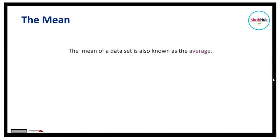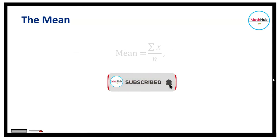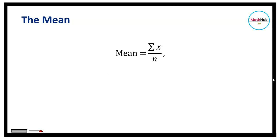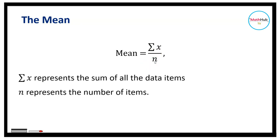The mean of a data set is also known as the average of the data set. This can be computed by dividing the sum of the data items by the number of items. The notation here represents the sum of all data items and the n here represents the number of items.